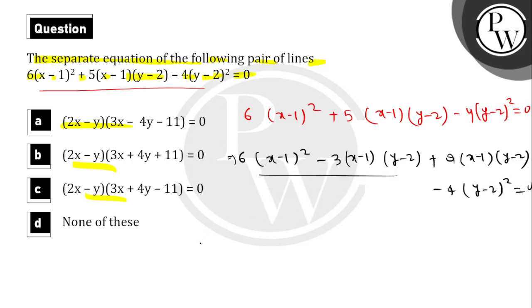In the first two terms we have 3(x-1) as a common factor. In the next two terms we have 4(y-2) as a common factor.